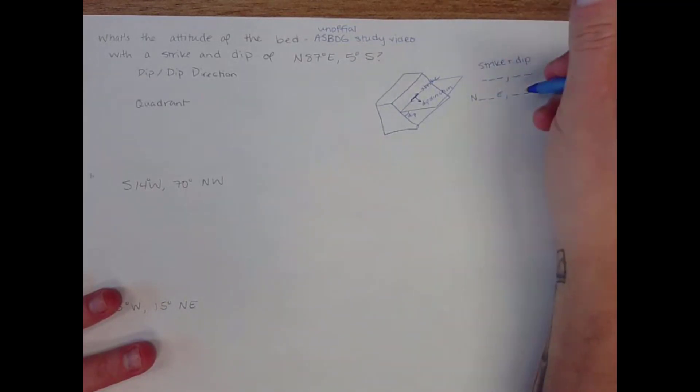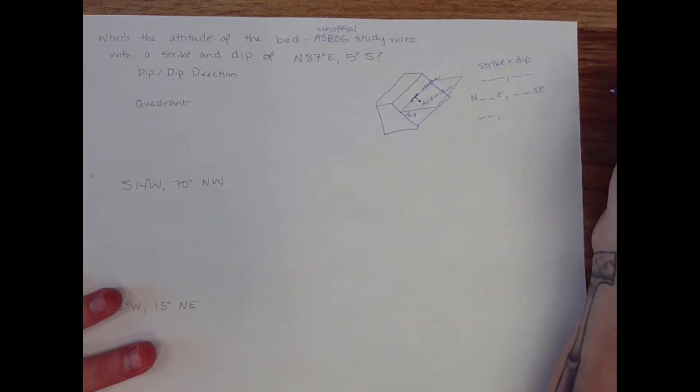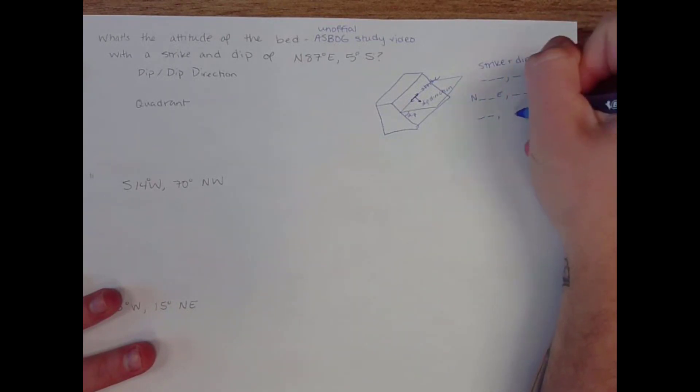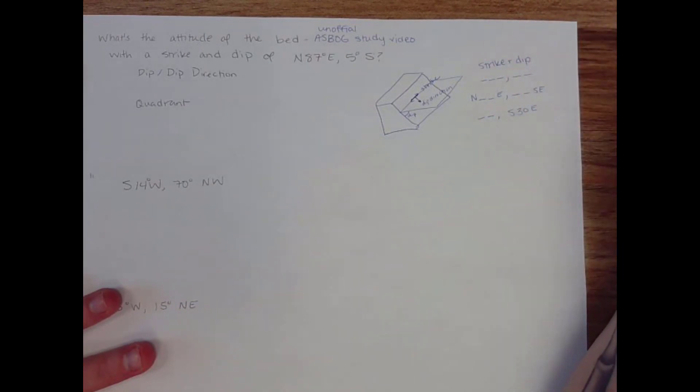And the third way to write the same information is just to include dip and dip direction. So to do that, you would write the dip amount. And then you write the exact dip direction, not just southeast, for example, but that precise amount to the southeast. So we could say like south 30 east.